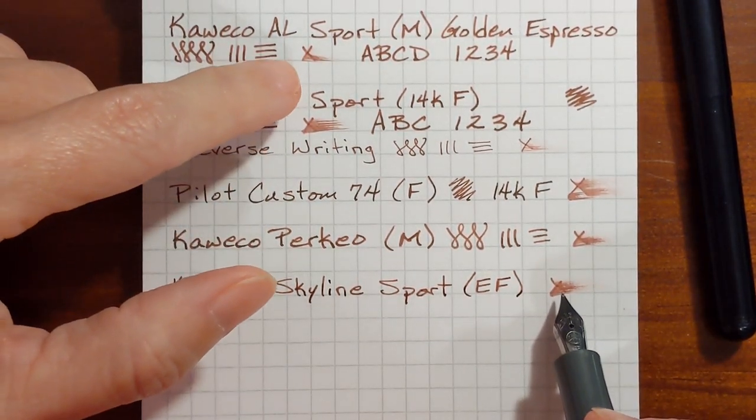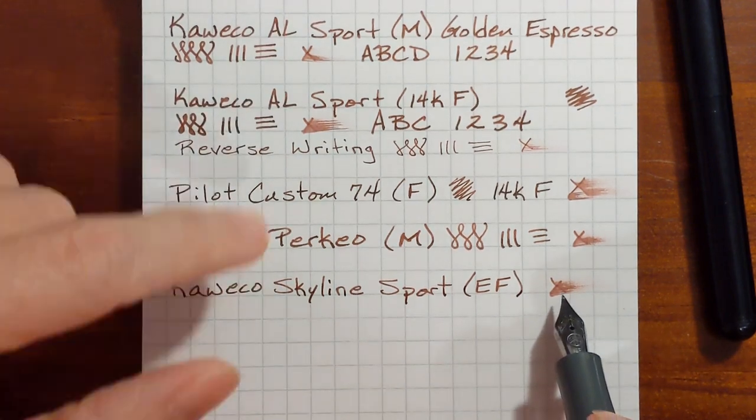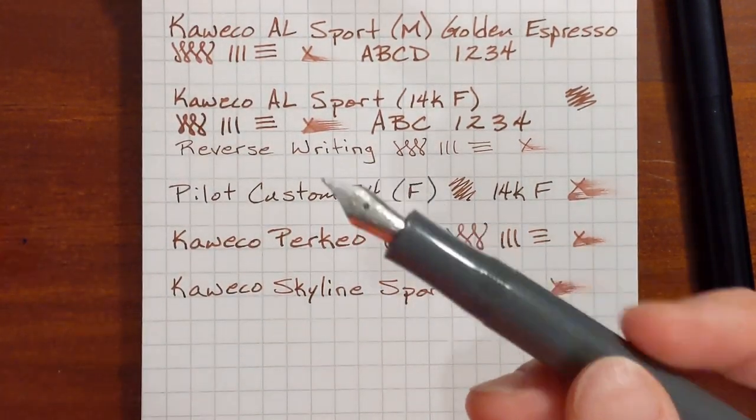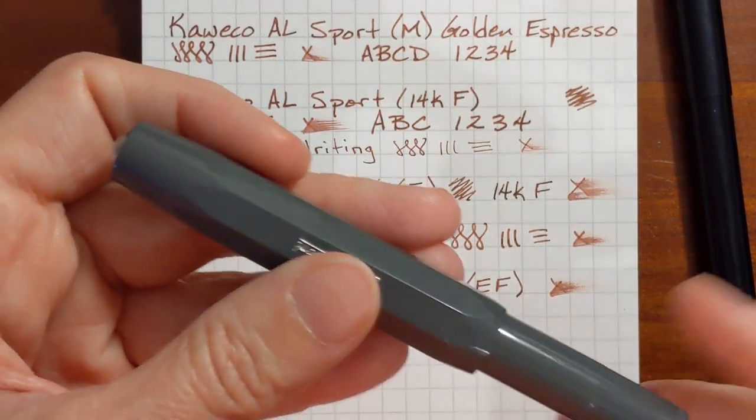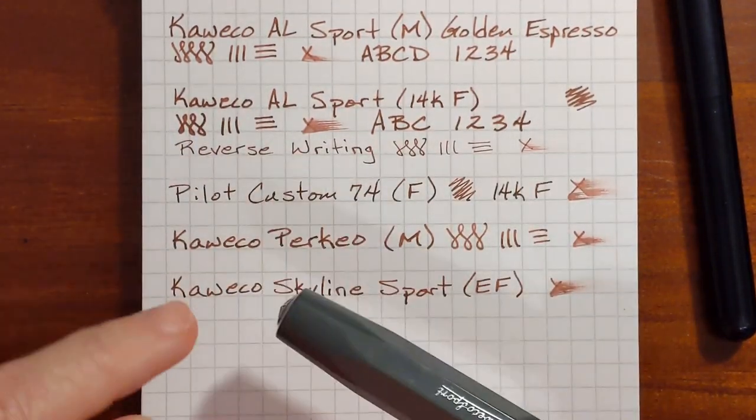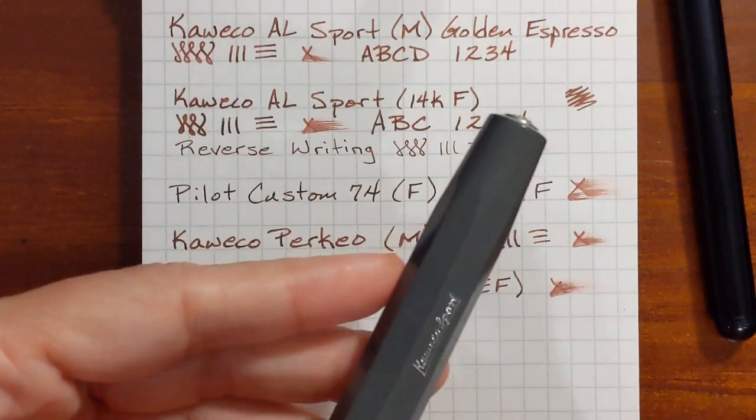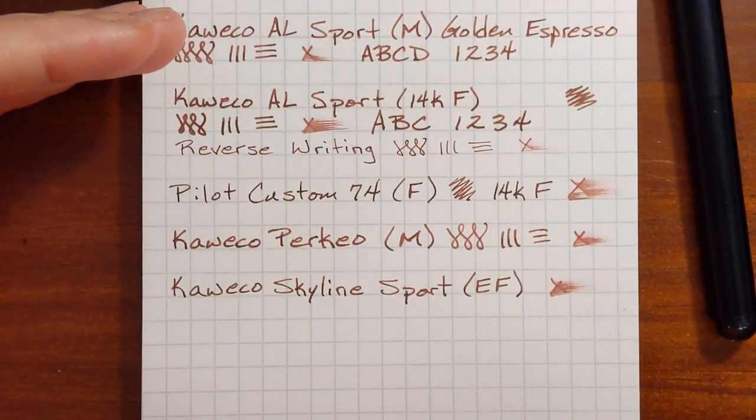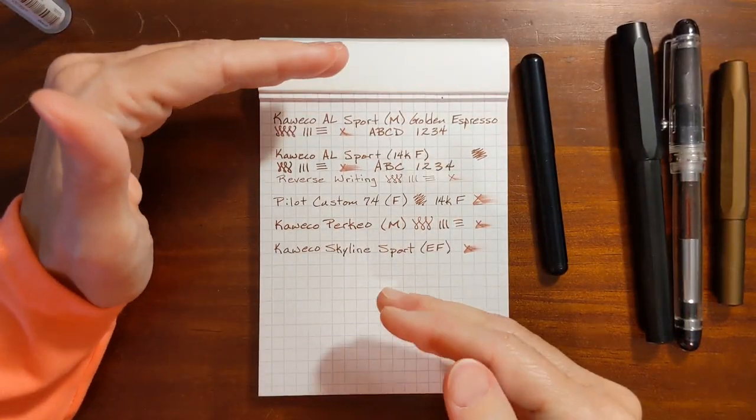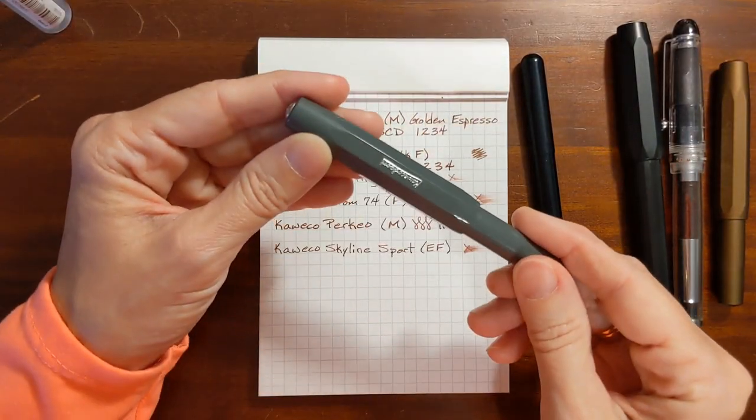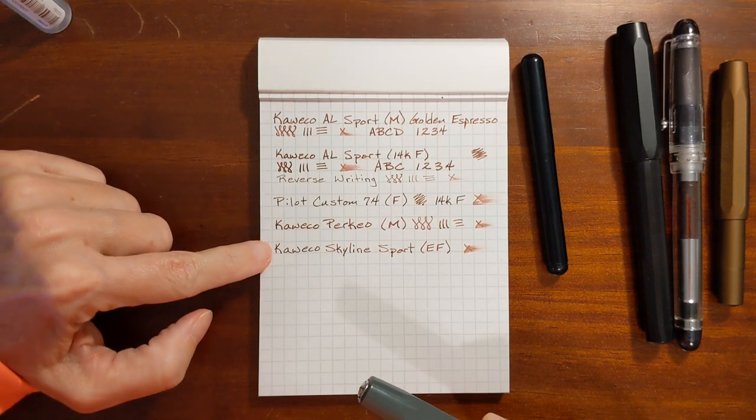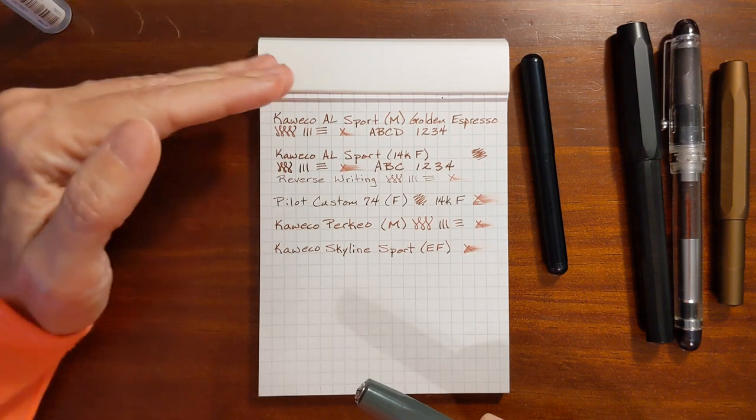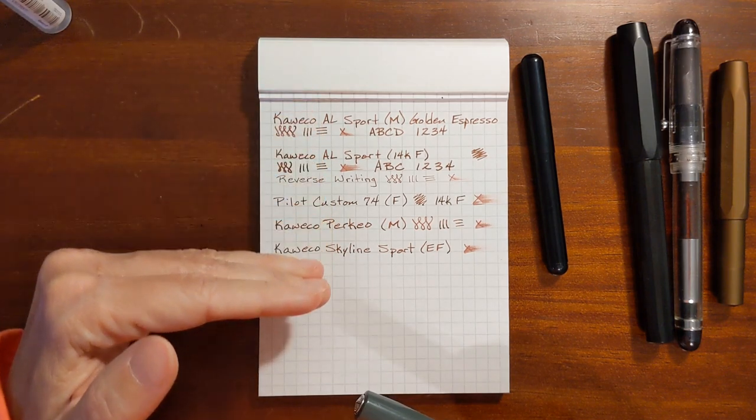So it's a little bit wetter than this medium nib, they're probably close to the same. Because one thing about this particular Skyline sport, I don't know if it's true with all of them because I don't think it is true for all Skyline sports. My particular pen, if I'm writing this is like an A6 page, so if I'm writing a page with this pen it will start out nice and writing nice and dark putting down a nice amount of ink.